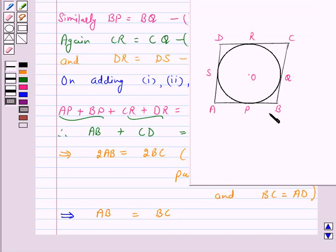Now, adjacent sides of a parallelogram are equal, that is AB is equal to BC is equal to CD is equal to DA.